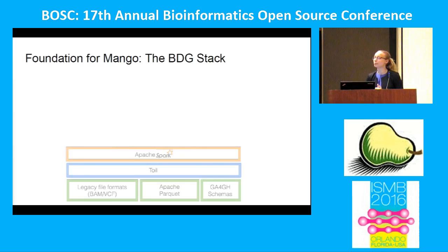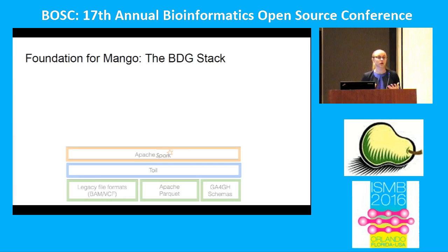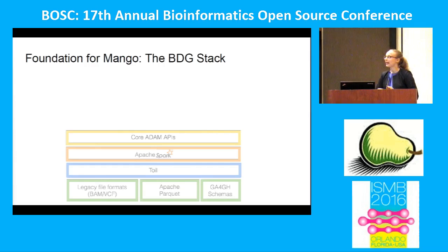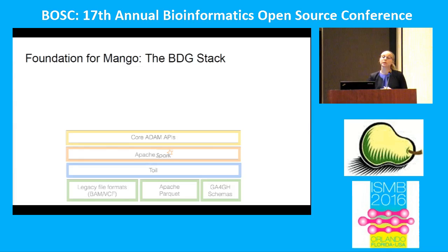On top of that we have our computation engine. Many of you may have heard of Apache Spark — a large computational system that allows you to analyze large datasets in a bulk processing environment, generalized for all types of datasets. On top of that is an API called ADAM, which Frank is going to talk about more in the next talk. ADAM allows us to take the nice abstractions from Spark for a distributed environment and apply them to genomic data in particular, so we can run whole scans on our genomic data to find interesting regions.